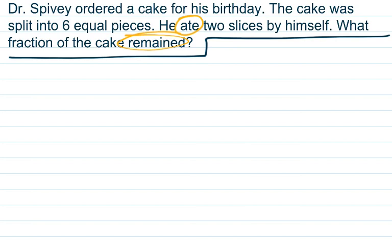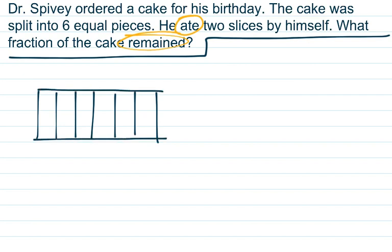So let's start by drawing a cake. I don't know about you, but I'm not great at drawing circular cakes. So I'm going to draw a rectangular cake split into six equal pieces, which means I need seven lines. One, two, three, four, five, six, seven. Let's turn our cake. Let's check. One, two, three, four, five, six pieces. Awesome.